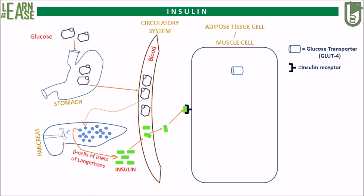This hormone-receptor binding will send a signal inside the cytoplasm to mobilize GLUT4 and fuse it onto the cell membrane. As soon as GLUT4 fuses to the cell membrane, glucose from the blood will move inside the target cells — that are cells of adipose and muscle tissue. This will bring down the glucose concentration back to normal levels, that is 80 to 100 mg percentage.